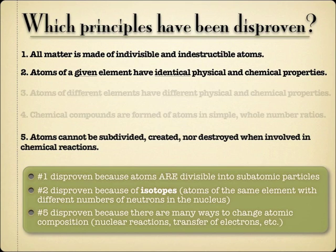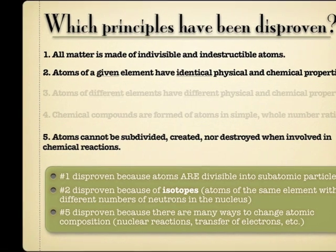Even principle five — that atoms cannot be subdivided, created, nor destroyed when involved in chemical reactions — has been disproven. There are many ways to change atomic composition; we do gain or lose electrons in chemical reactions, and all bets are off when we have a nuclear reaction going on. Still, two out of five from something created in the early 19th century is really not too bad of a deal.